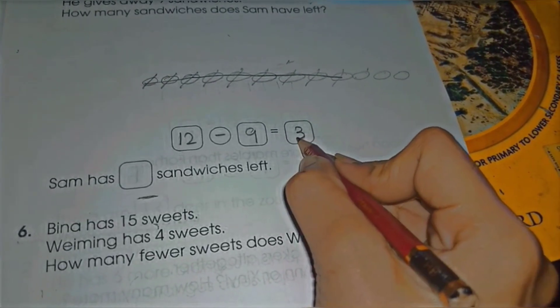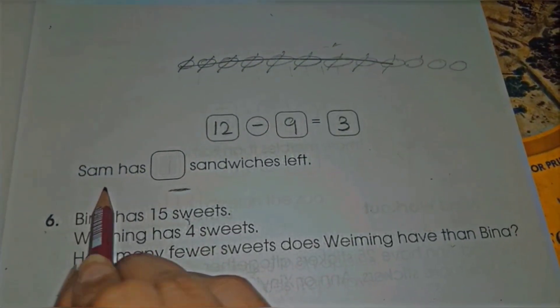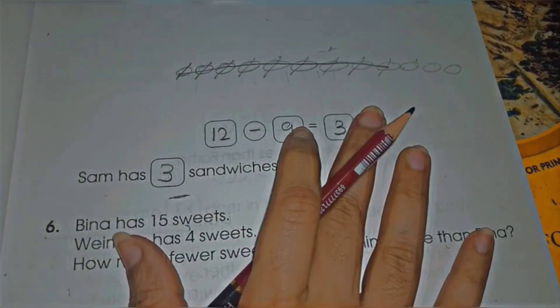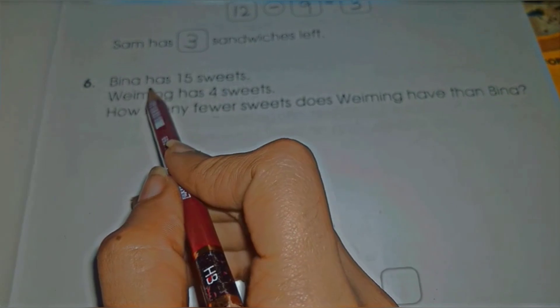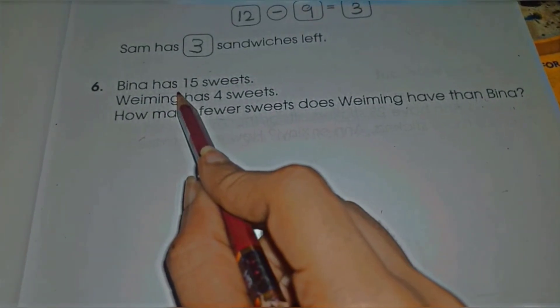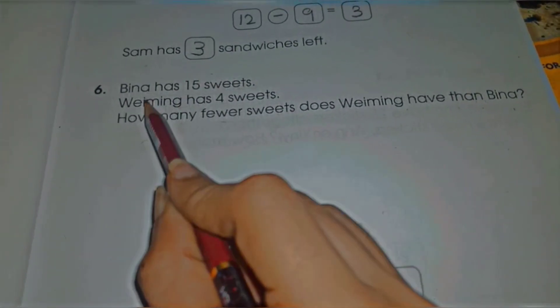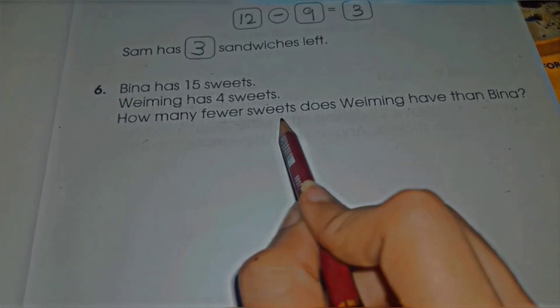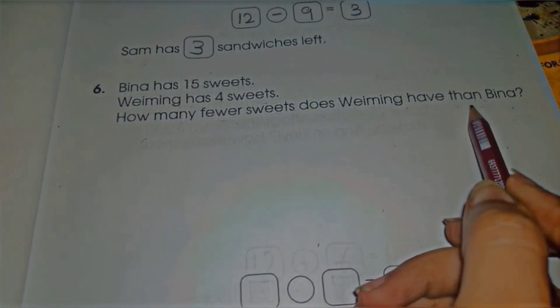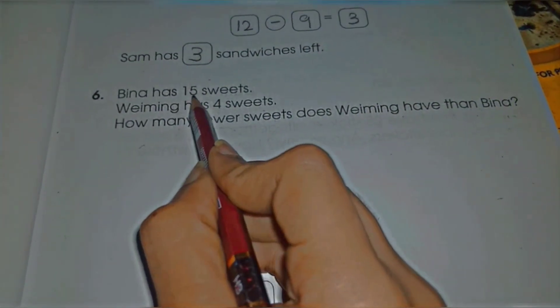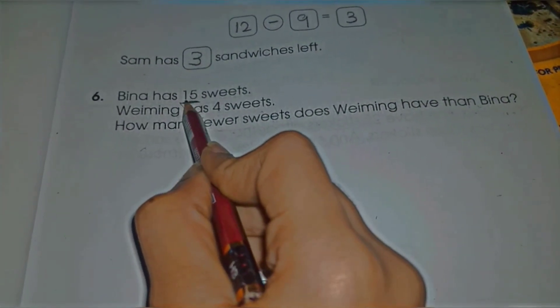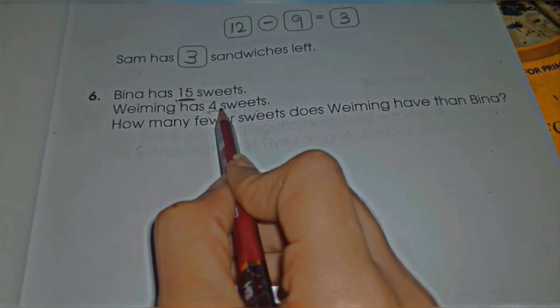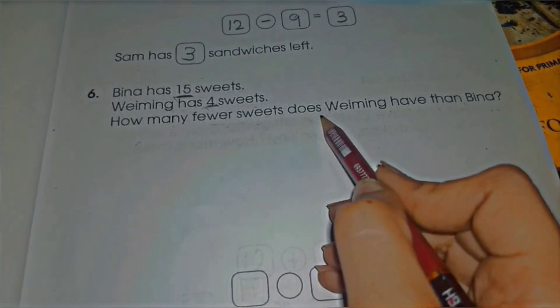Okay, so the next question is: Bina has 15 sweets, Weiming has 4 sweets. How many fewer sweets does Weiming have than Bina? Bina has 15 sweets, it means Bina ke paas kitni sweets hai 15, and Weiming ke paas kitni sweets hai 4.